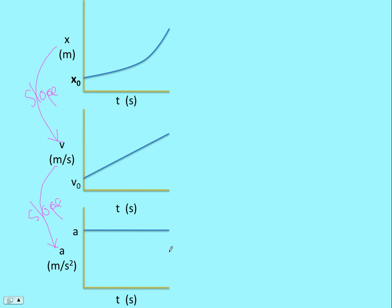And then going the other way, if we have acceleration and we want the change in velocity, we take the area under the curve. And if we have velocity and we want the change in position, we take the area.